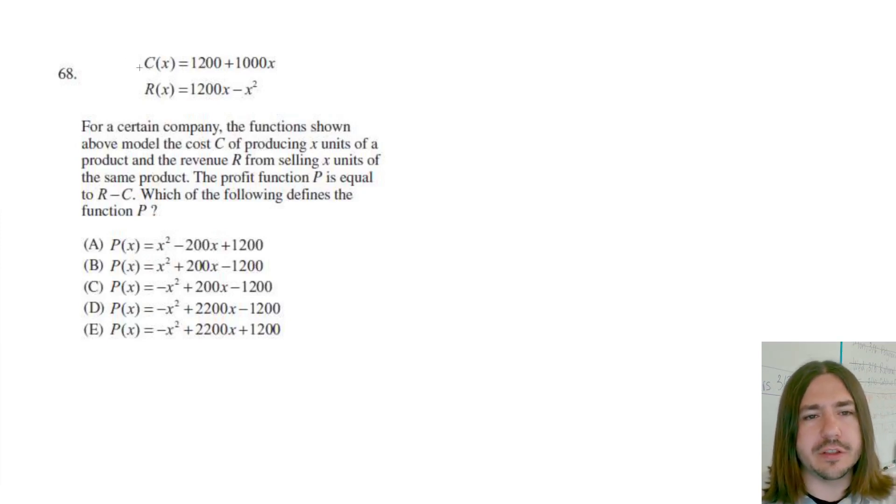It says, for a certain company, the functions shown above model the cost C of producing X units of a product and the revenue from selling X units of the same product. The profit function P is equal to R minus C. The profit is going to be defined by the revenue minus the cost. So how much money is coming in minus how much money is going out. Which of the following defines the function P?